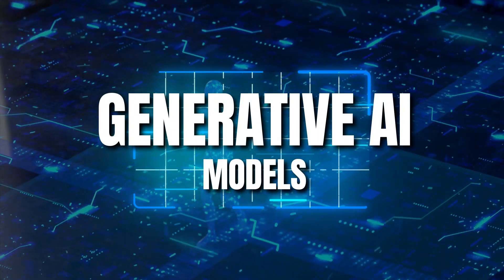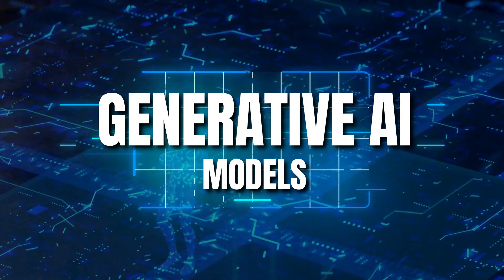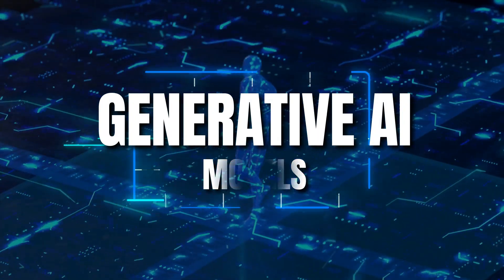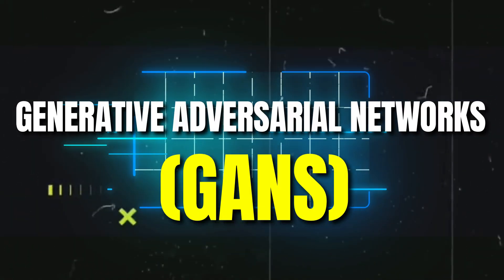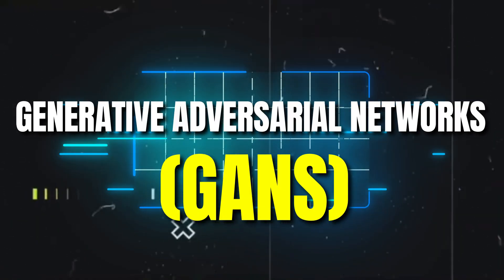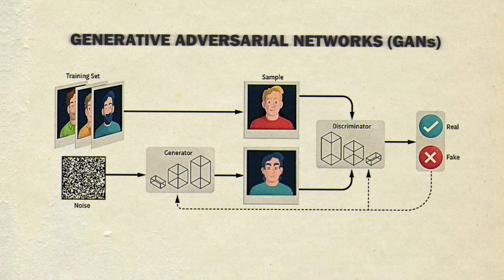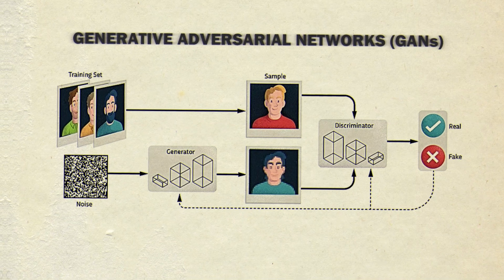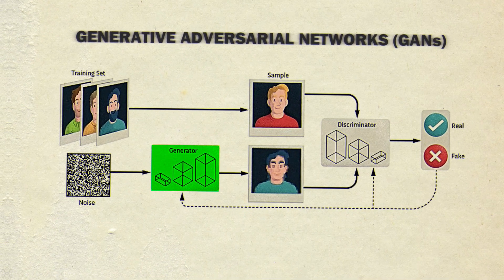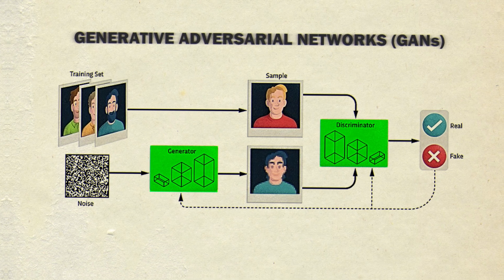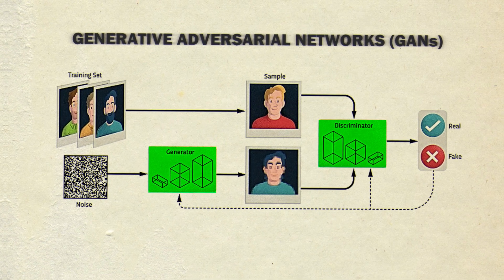Let's discuss different types of Generative AI models. Generative Adversarial Networks (GANs) are a class of machine learning frameworks where two neural networks — the generator and the discriminator — compete with each other to generate realistic data.